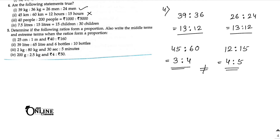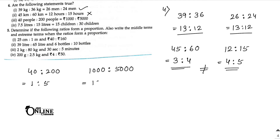Third statement: 40 people — dividing by 40 — gives 1 is to 5. And rupees 1000 is to rupees 5000 — dividing by 1000 — also gives 1 is to 5. Both are equal, so this is true.